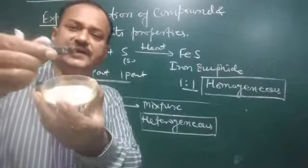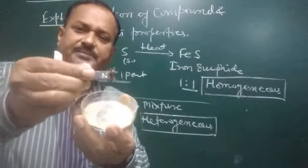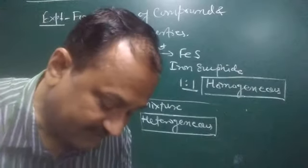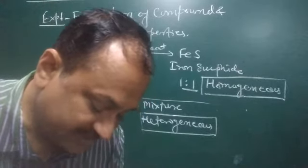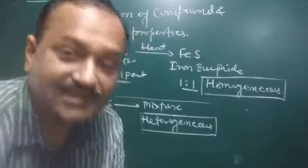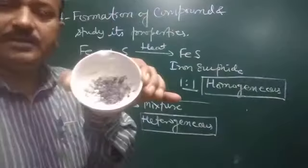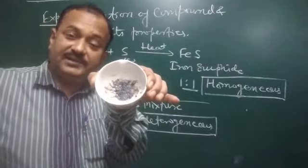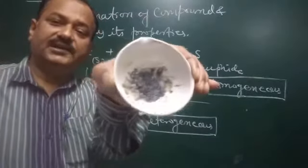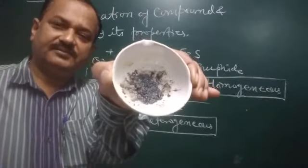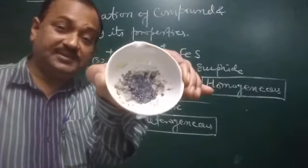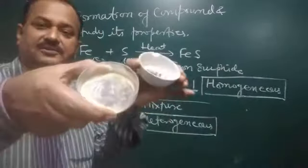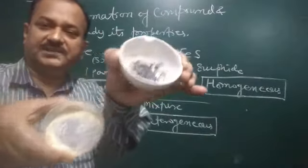We can see the iron particles — they have been separated by the magnet and sulfur is left. Now on the other hand, we cannot separate the compound. See — what I have written earlier: it is homogeneous in nature. It is homogeneous, it is uniform throughout. This iron-sulfur mixture is non-uniform, but the compound is uniform.